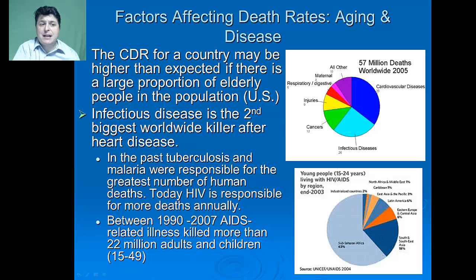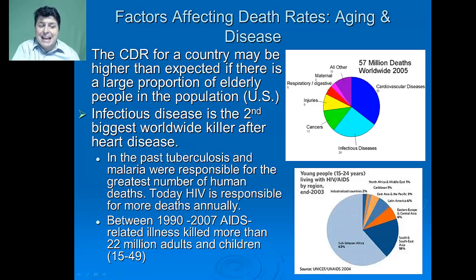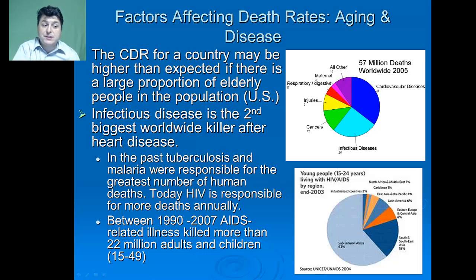A major factor affecting death rates is aging and disease. The crude death rate for a country may be higher than expected if there's a large proportion of elderly people, as in the United States. Infectious disease is the second biggest worldwide killer after heart disease. In the past, tuberculosis and malaria were responsible for the greatest number of deaths, but today HIV is responsible for more deaths annually. Between 1990 and 2007, AIDS-related illnesses killed more than 22 million adults and children between the ages of 15 and 49.